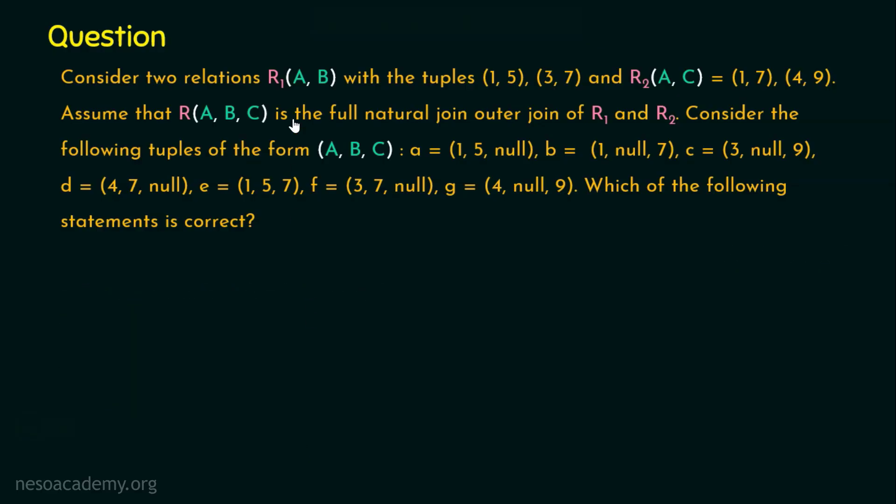Let's formally start with R1 relation with attributes A, B that contains the tuples (1, 5) and (3, 7). R1 has A, B with the tuples 1, 5, 3, and 7.